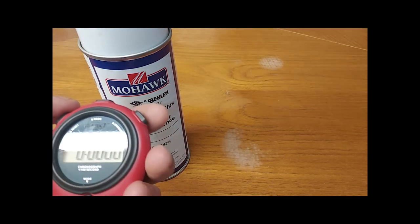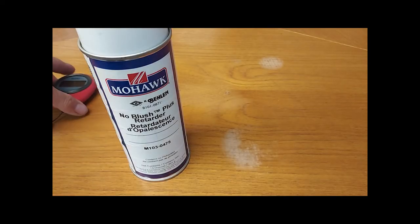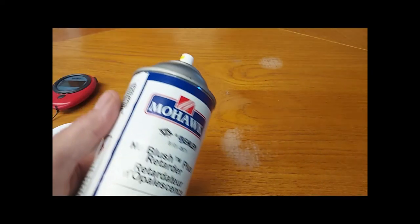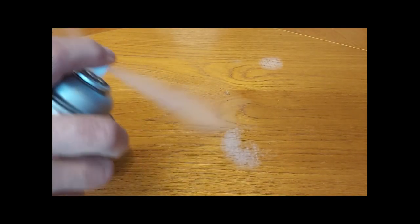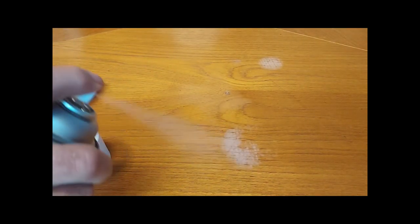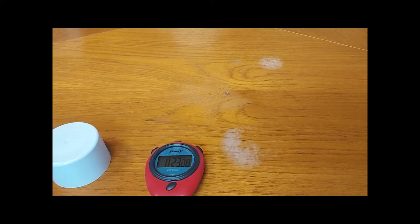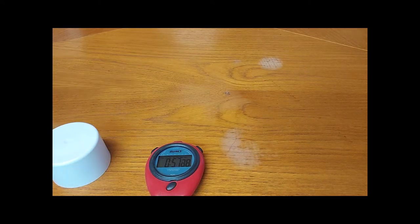The last method we're going to use here is a product called No Blush Retarder. It's a retarder lacquer thinner from a company called Mohawk. We used to be able to get it from Mohawk and from Behlen. Mohawk has since bought Behlen, so it's only available now from Mohawk. We're just going to spray a little bit onto the surface and give it time to see if it softens up the finish and dissolves it.